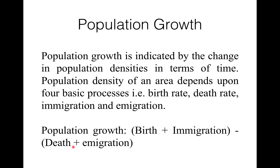Immigration is the phenomenon of entry of certain individuals of the same species into an area from outside, while emigration is just opposite — it is the phenomenon of departure of individuals of the same species from an area to outside. Immigration and birth are responsible for increasing population size and density, while emigration and death are responsible for decrease in population size and density.